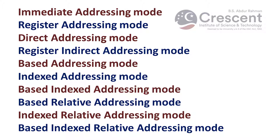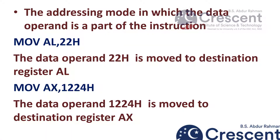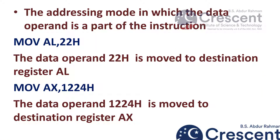We shall see the addressing modes with examples. The first type is immediate addressing mode, in which the data operand is a part of the instruction. For example, MOV AL, 22H — here MOV represents the data transfer instruction, AL is the 8-bit destination register, and 22H represents the data operand. The value 22H is moved from source to destination register AL. Here we are specifying the data as a part of the instruction.